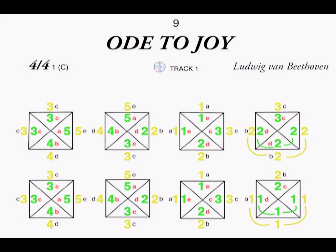Inside the book, you will see that beside every song title is the author name or names. There is also information about the song, such as the time signature, which is used to specify how many beats are in each measure and which note value constitutes one beat. We also show you in what key the song is written. In this example, it is C or number one, Do.